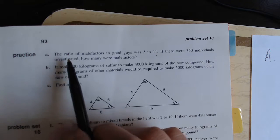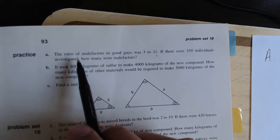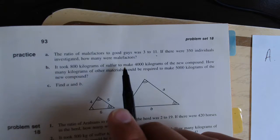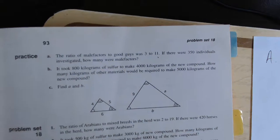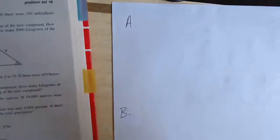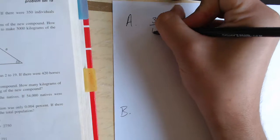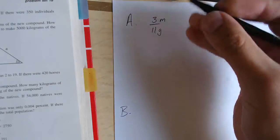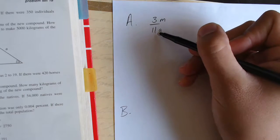It tells us the ratio of malefactors to good guys, or the ratio of M to G, was 3 to 11. If there were 350 individuals investigated, how many were malefactors? So let's begin by writing our three ratios. The first ratio is going to be 3 to 11, which is M to G. So that's part A to part B.